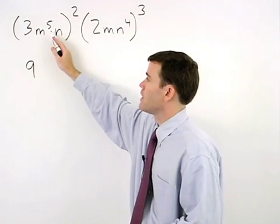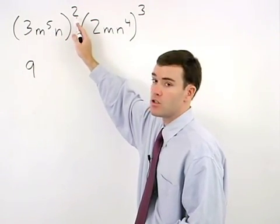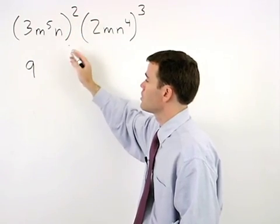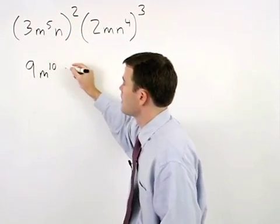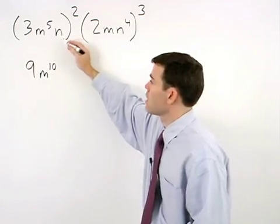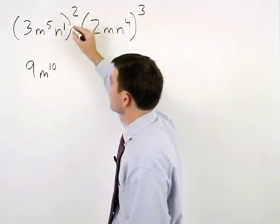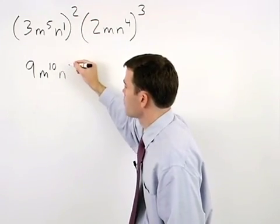Then multiply each of our exponents by 2. So we have 5 times 2, which gives us m to the tenth, and think of n as n to the first. So 1 times 2 is 2, and we have n squared.